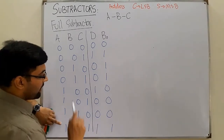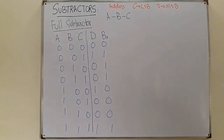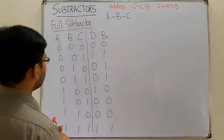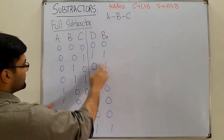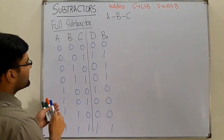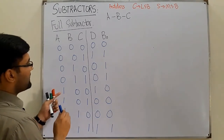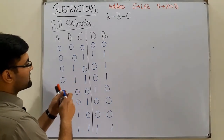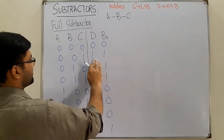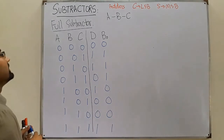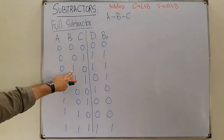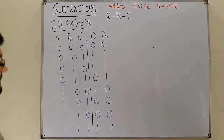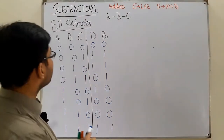For 111: 1−1−1 requires a borrow; 2−1−1=0, difference 1, borrow 1. After cross-checking the truth table, the results are verified correct.